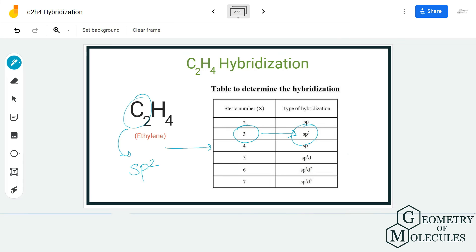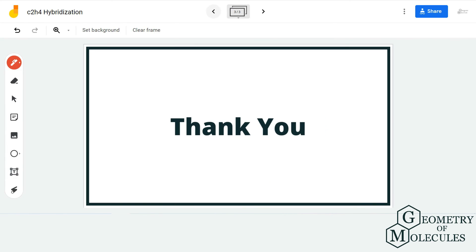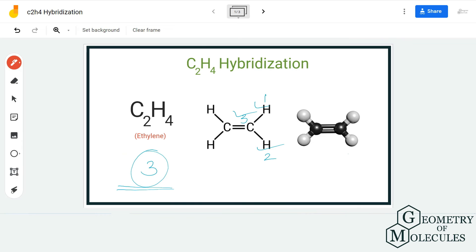As a result, the hybridization for C2H4 molecule is sp2. It forms three hybrid orbitals by combining one s orbital and two p orbitals to accommodate these three bonding pairs of electrons.